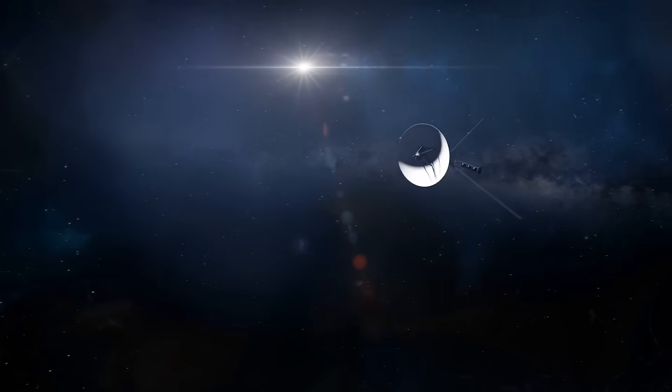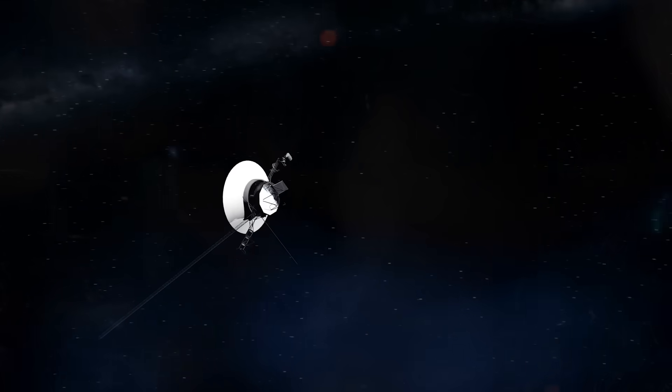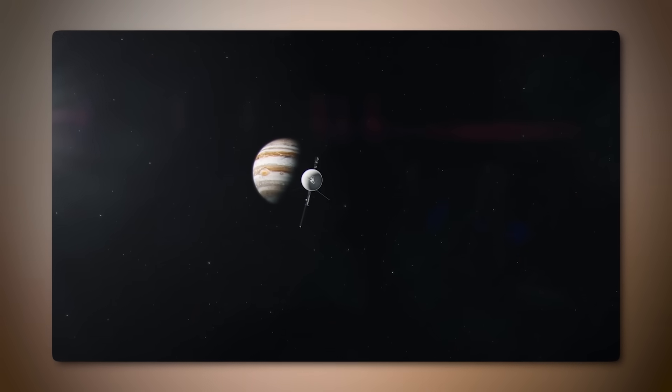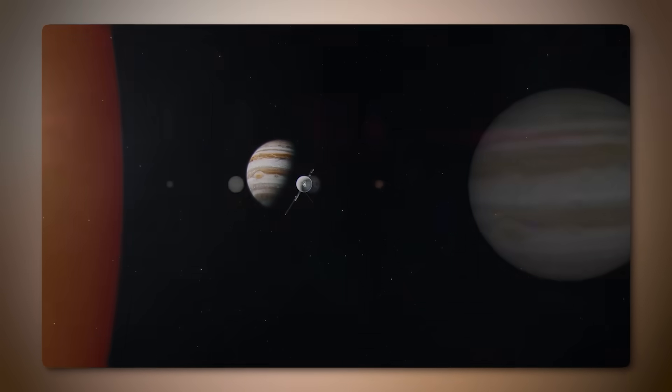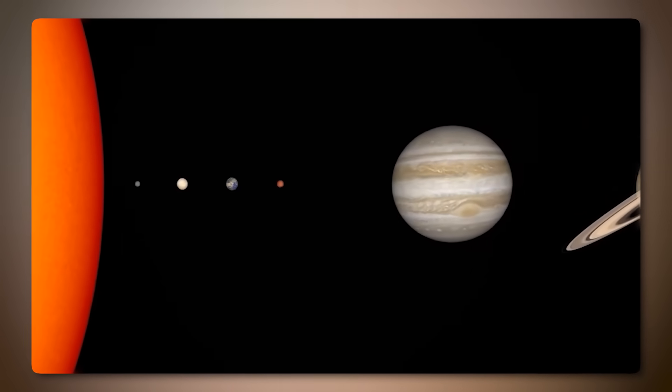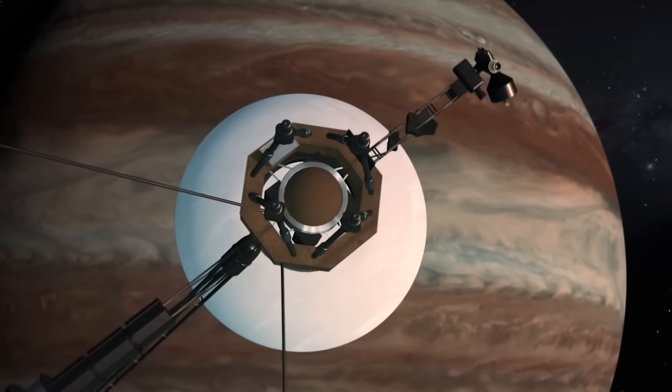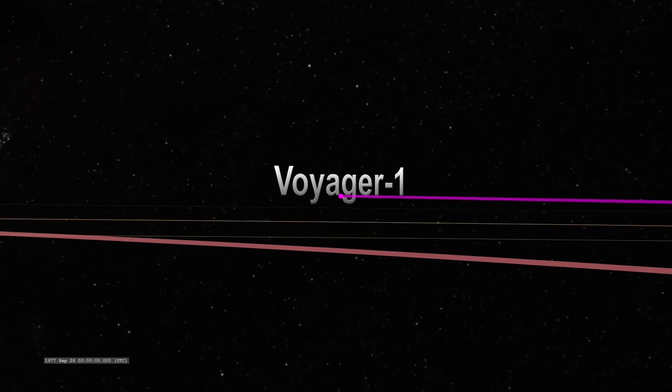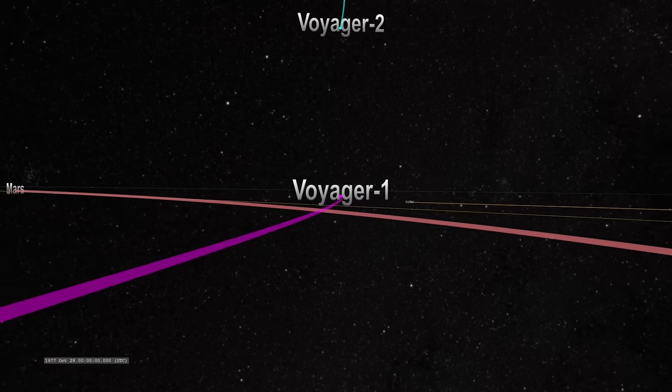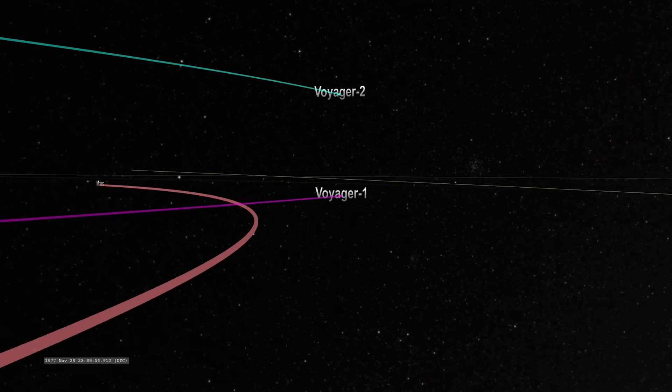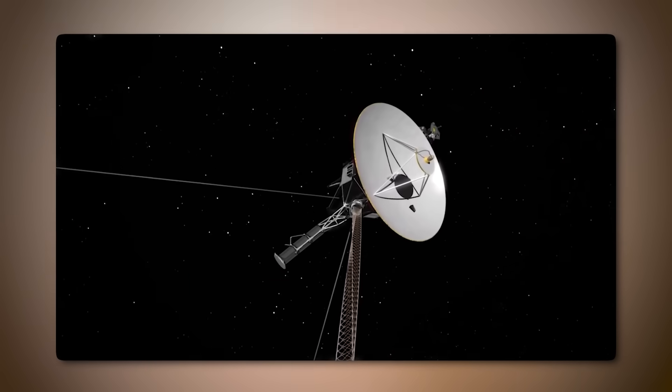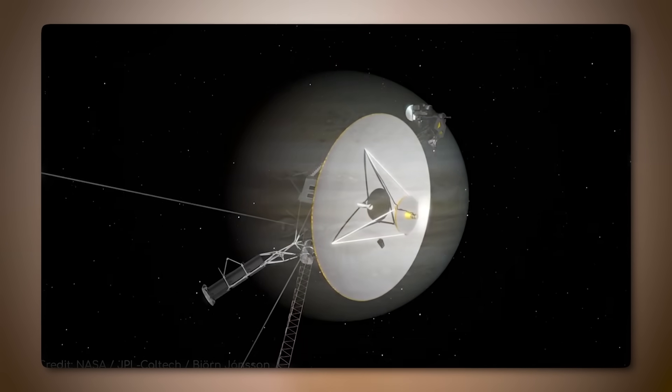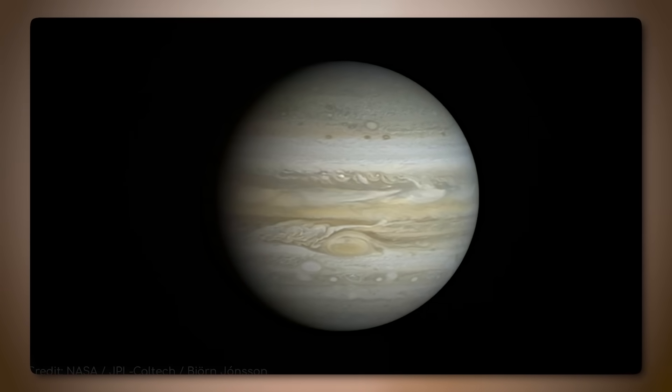One of Voyager 1's more recent discoveries has been the detection of a hum in interstellar space. This low-frequency hum is a continuous sound caused by the vibrations of plasma waves in interstellar space. Unlike the occasional plasma wave spikes caused by solar flares, this hum is steady, and represents the ambient plasma environment far beyond the heliosphere. This faint music of interstellar space has given scientists a new way to measure the density of interstellar materials surrounding our solar system.